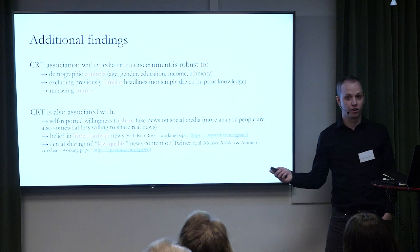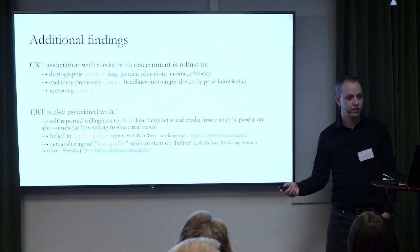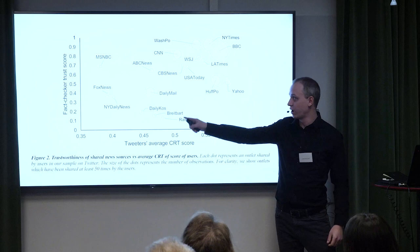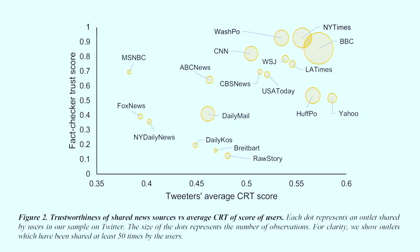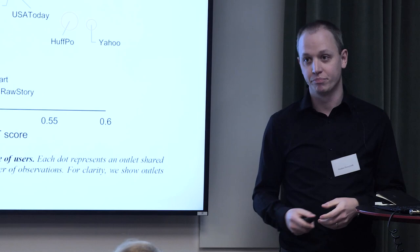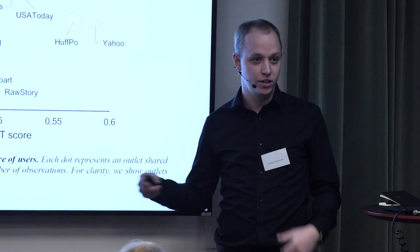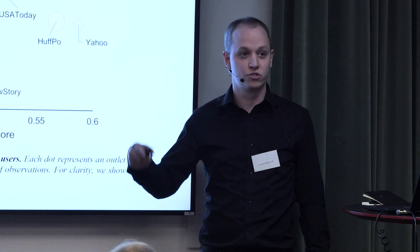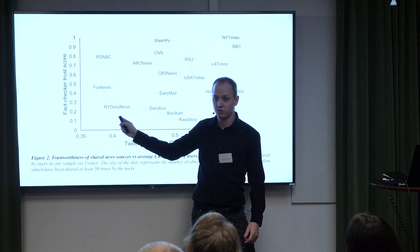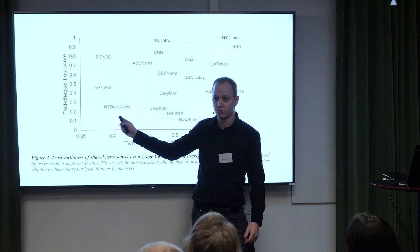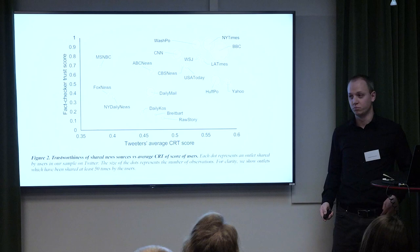What's shown is CRT score on one axis and fact-checker trust score on the other. In a previous study, we had fact-checkers rate the trustworthiness of 60 different sources. People who are more reflective — scoring higher on CRT — share more content from sources that fact-checkers view as trustworthy. This was run in the UK, so there's lots of sharing from the BBC for high-CRT people, and less sharing from Daily Chaos — a hyper-partisan site — Fox News, Daily Mail, et cetera. Actual sharing on social media is related to reflectiveness: more reflective people share higher-quality news content.